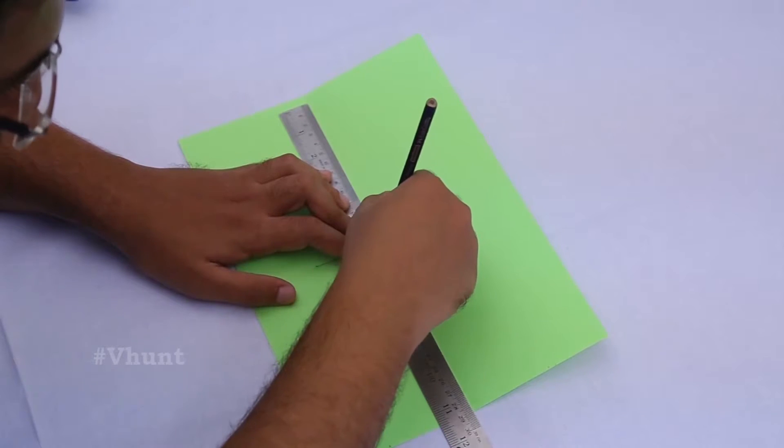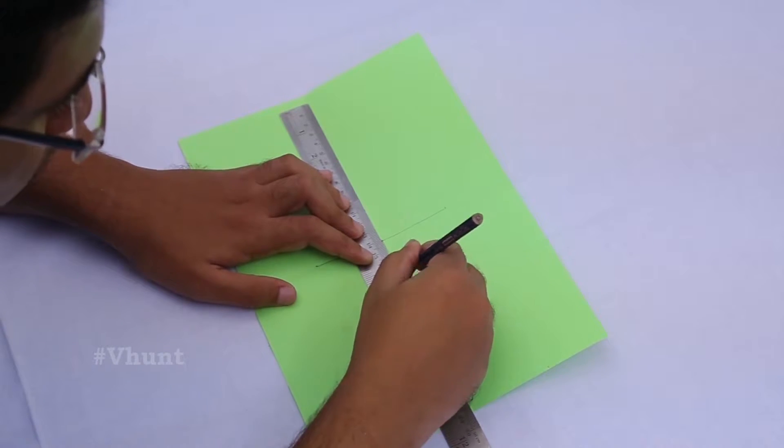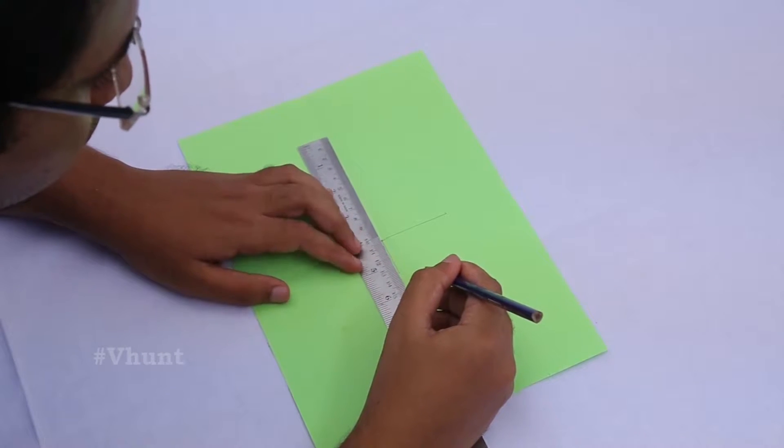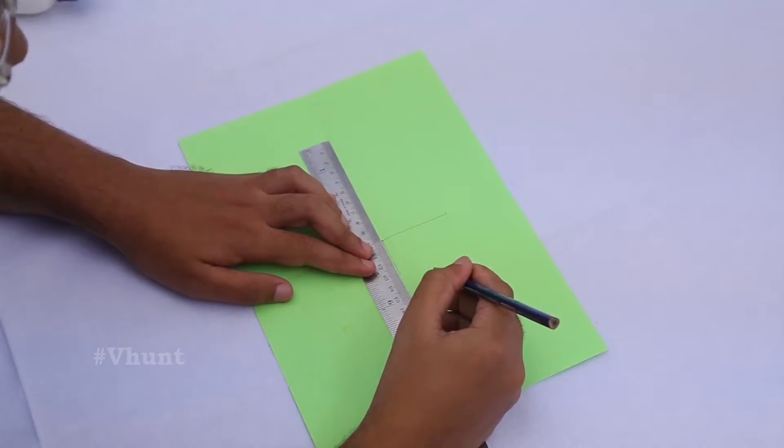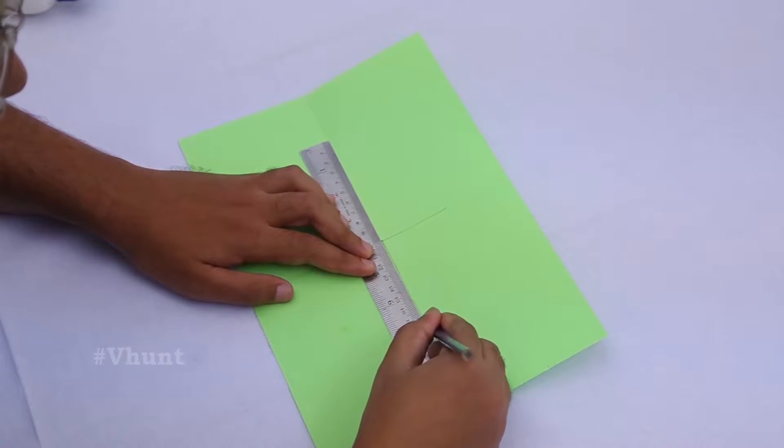Now turn the paper and mark a line from middle to right and left like this. The length should be 5.2 cm.